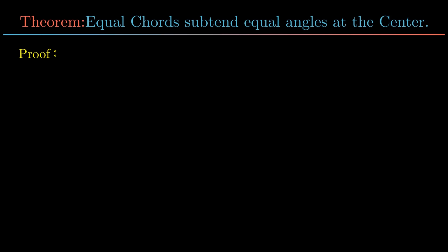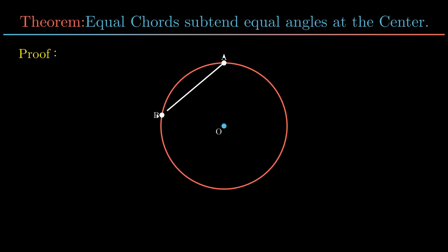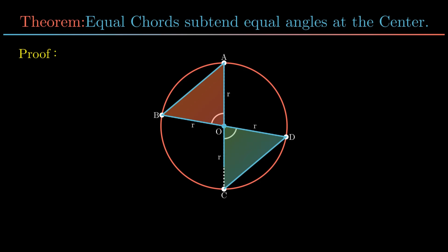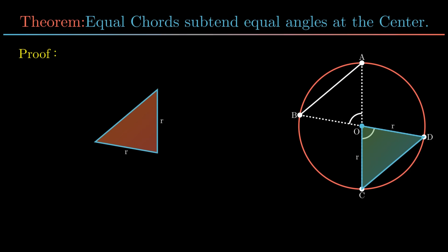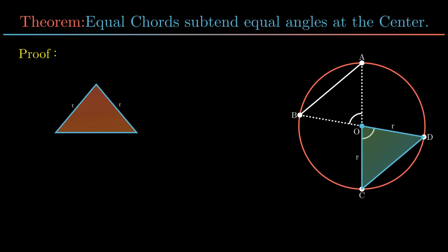Consider a circle with center point O. Let AB and CD be the two equal chords. Join the endpoints of each chord with center O, making angle AOB and angle COD respectively at the center.